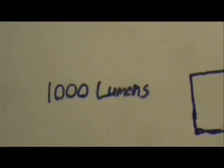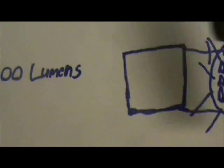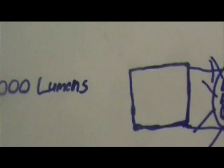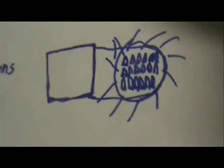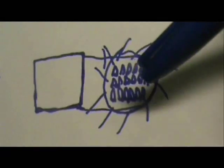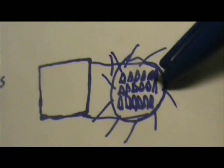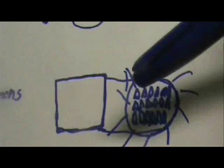Okay, so imagine that you have yourself a floor tile because a floor tile is basically one square foot in area. Now, you take that and imagine one foot away, you have 1,000 candles burning. The amount of light being produced by 1,000 candles will equal that 1,000 lumens. That's really all you need to know.